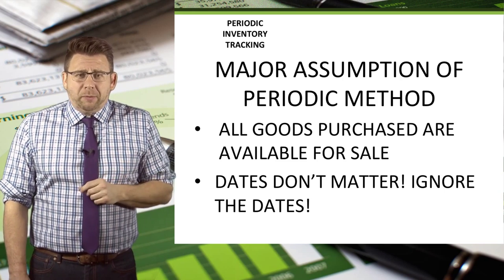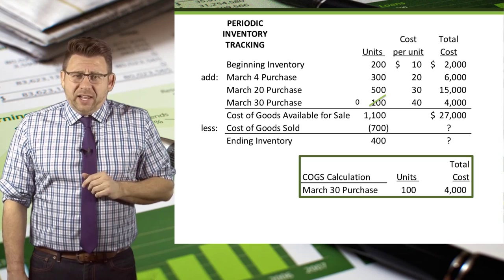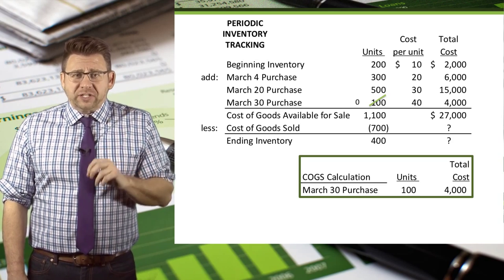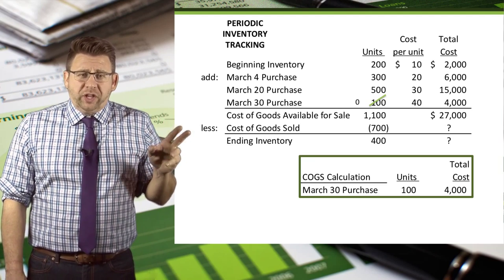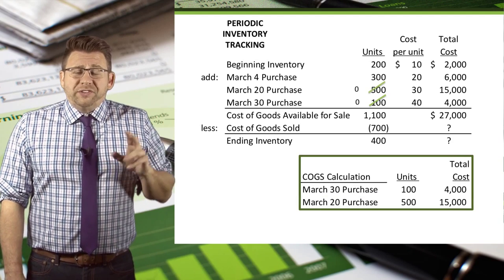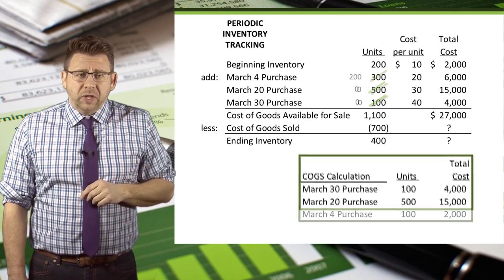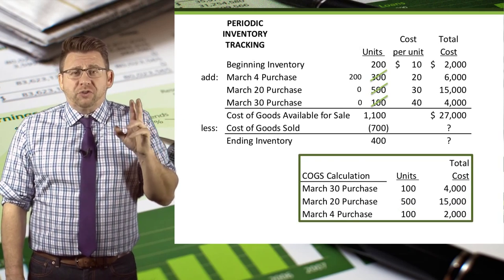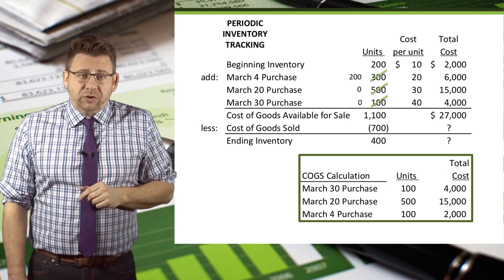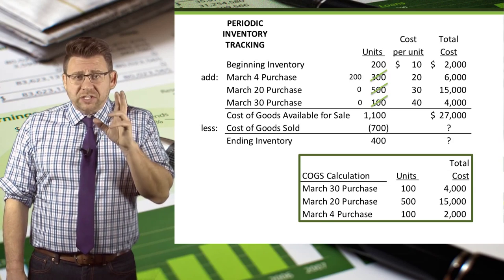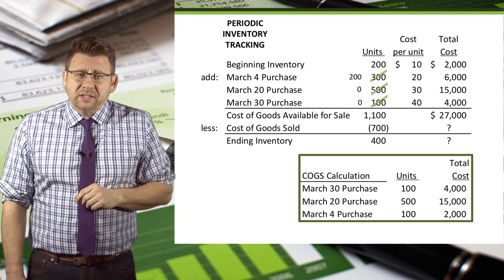Which 700 units did we sell? LIFO stands for last in first out, so we sold all 100 units of the March 30 purchases, leaving zero. We sold all 500 units of the March 20 purchases, leaving zero. We sold 100 units of the March 4 purchases, leaving 200 in ending inventory. We can account for all 700 units, and the cost of those is $21,000 — which is $4,000 plus $15,000 plus $2,000.